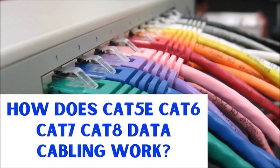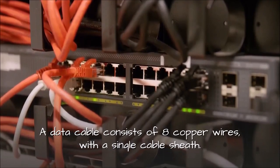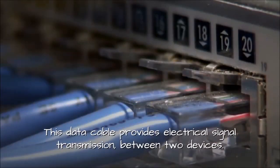How does CAT5e, CAT6, CAT7, CAT8 data cabling work? A data cable consists of 8 copper wires with a single cable sheath. This data cable provides electrical signal transmission between two devices.